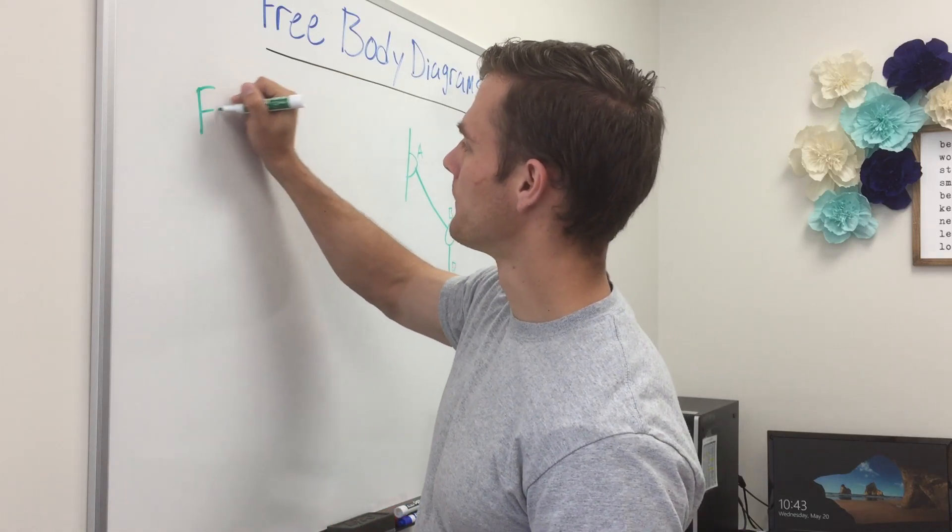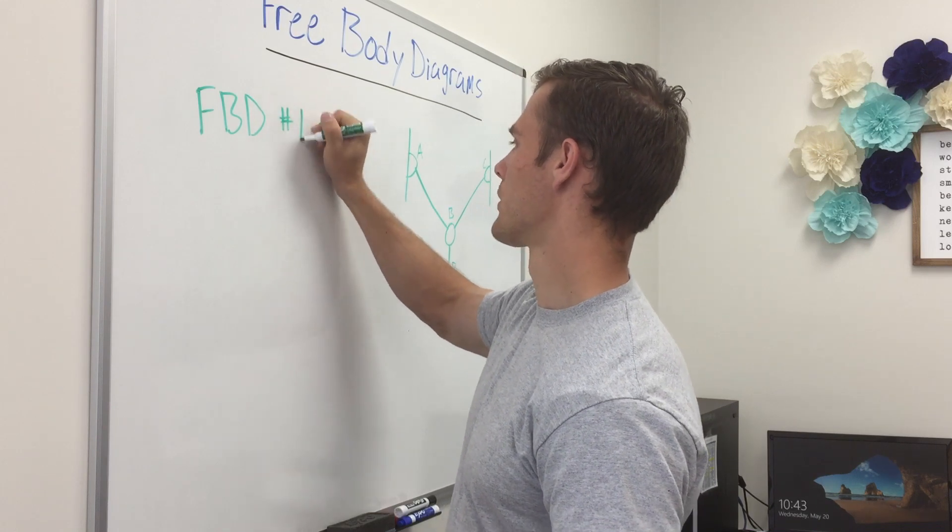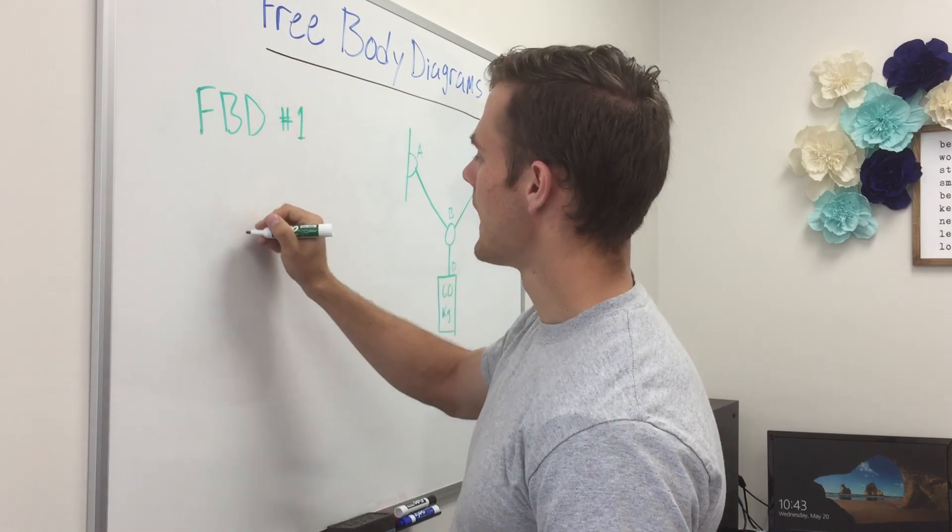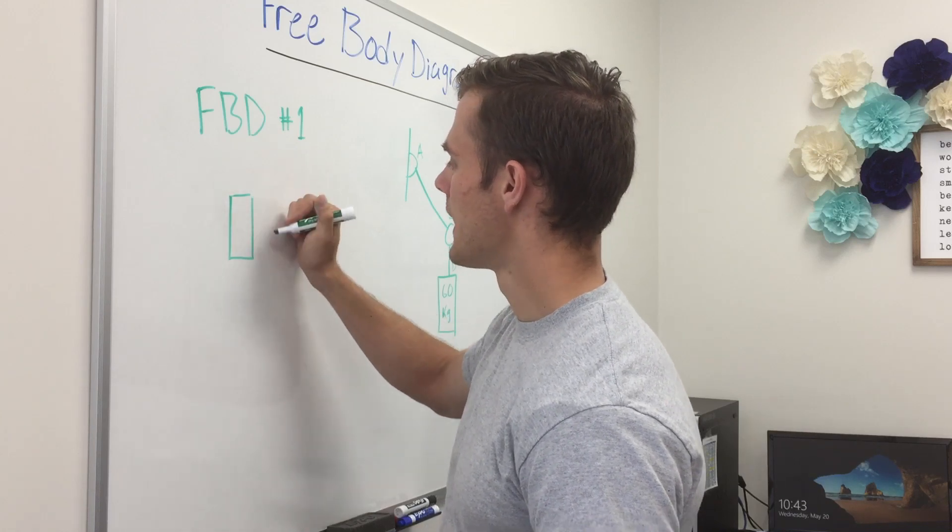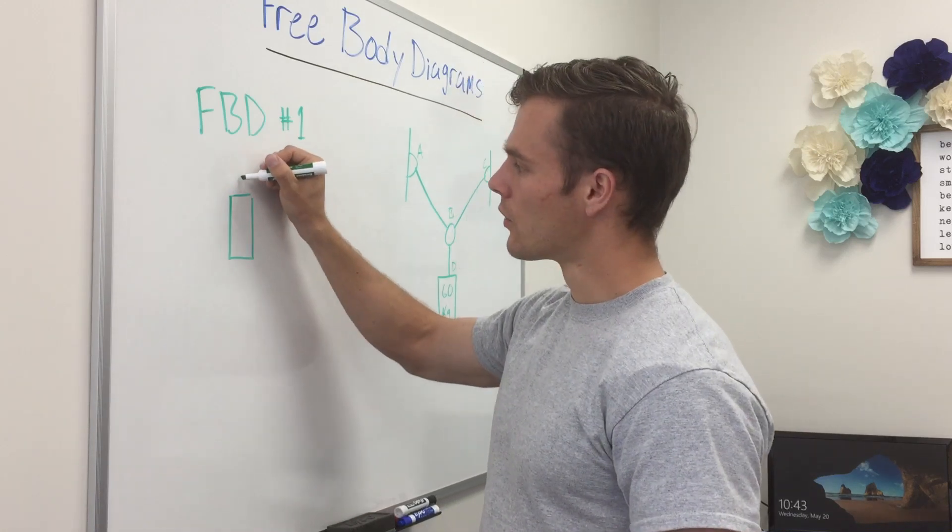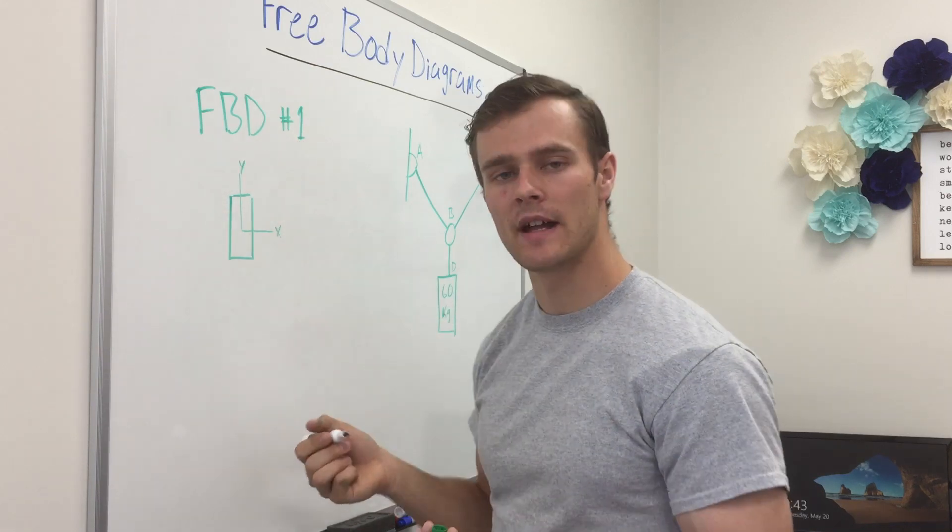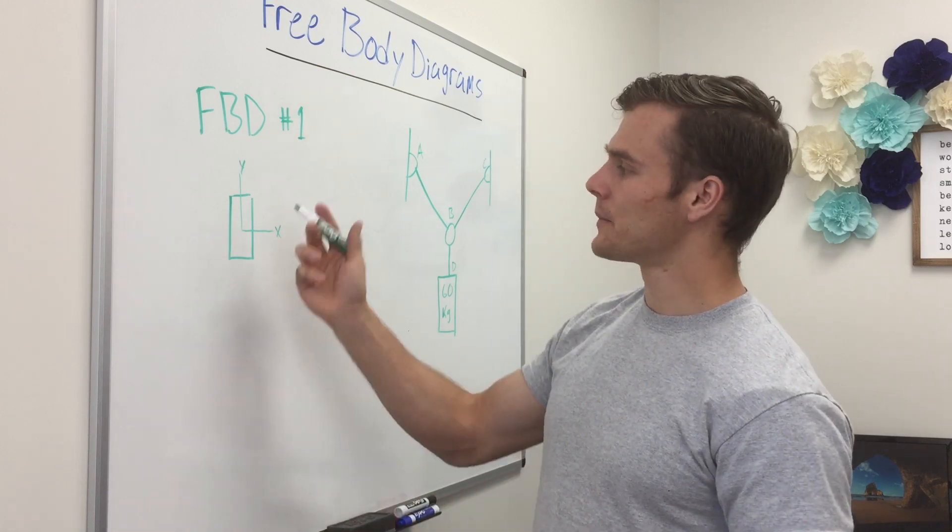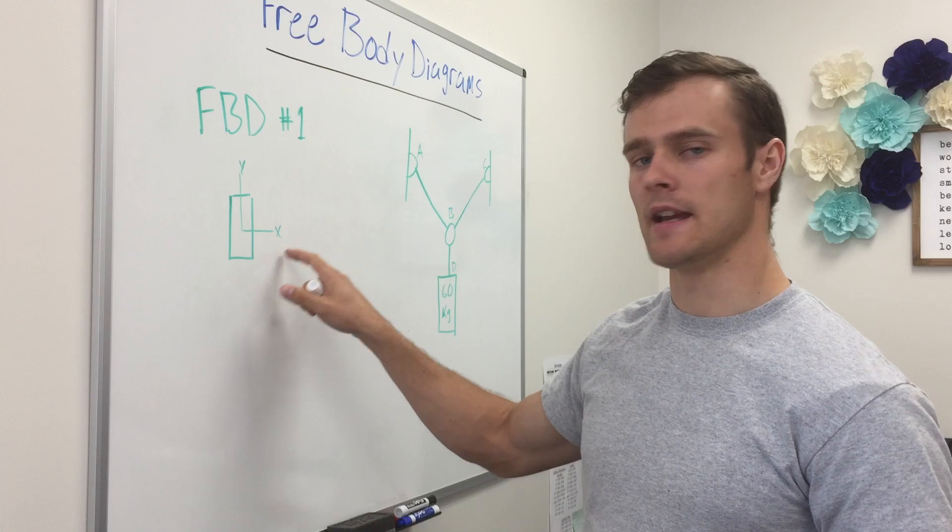So we'll call this free body diagram one, free body diagram number one and we'll have the cylinder right here and we're going to draw our axes right here x and y. And so that's to help us know that up is in the y direction and side to side is in the x direction.